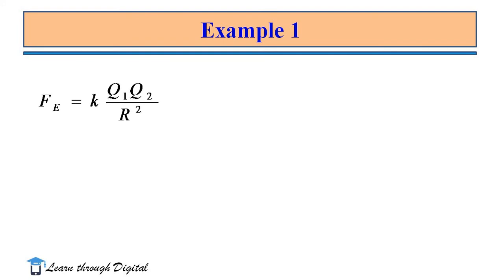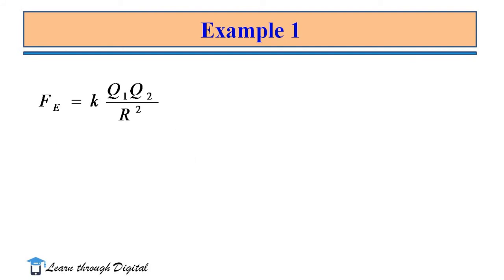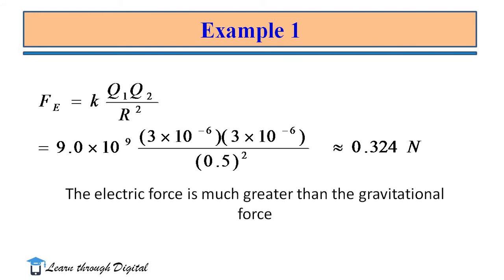Then we calculate the electric force between the two charges. F = K·Q₁·Q₂ / R². We substitute the value of K as 9 × 10⁹, the charges as 3 × 10⁻⁶ coulombs (3 microcoulombs), and the distance between the two charges as 50 cm. Finally, we get F = 0.324 Newtons. Comparing the gravitational force of 4.27 × 10⁻¹³ N to the electric force of 0.324 N, the electric force is much greater than the gravitational force.